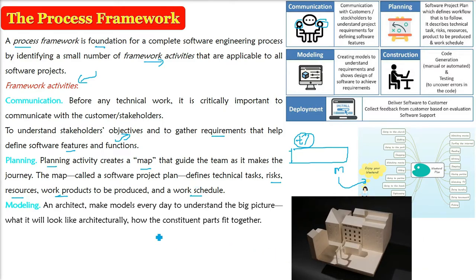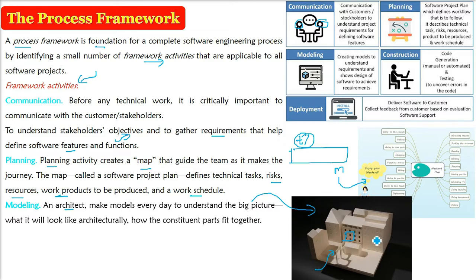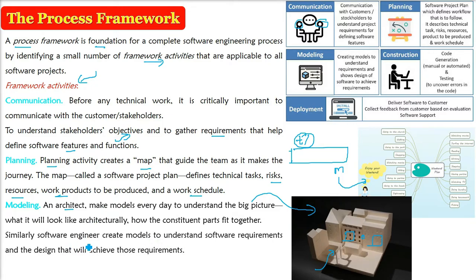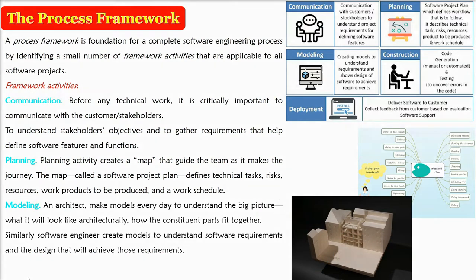If you are an architect, you make a model first — nobody starts making a house immediately. By the model you get a big picture of how your house will look; it may change, but you get the broad idea. Similarly, a software engineer is also a kind of architect. The software engineer has to create a model to understand the software requirements, and then only you can design, achieving those requirements posted by the stakeholders and customers.